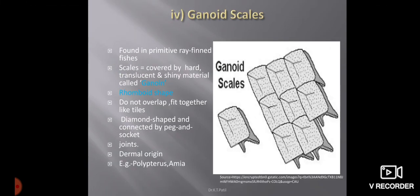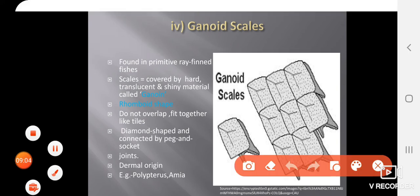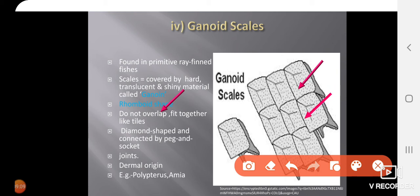Ganoid scales are found in primitive ray-finned fishes. These scales consist of a ganoin material, which is shiny and hard, providing shine and hardness to the scales. This scale is rhomboid in shape, so they are also known as rhomboid scales. These scales do not overlap each other but fit together like tiles, attached by a peg-and-socket joint. They are also dermal in origin. Best examples are Polypterus and Lepisosteus.